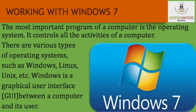Computer is a machine that cannot think on its own and requires instructions from us. The most important program of a computer is the operating system. It controls all the activities of a computer. There are various types of operating systems such as Windows, Linux, Unix, etc. Windows is a GUI, graphical user interface, between a computer and its users. It has been developed by Microsoft, the world's leading software company.